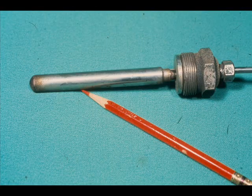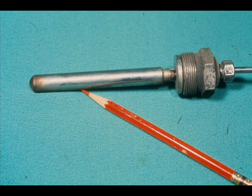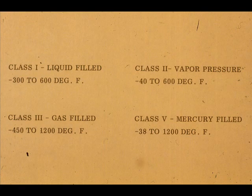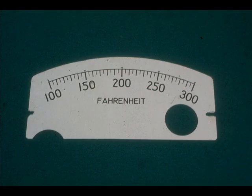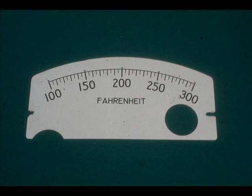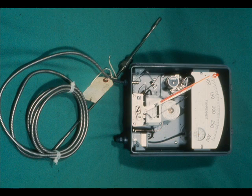Some disadvantages of the filled systems are the bulb may be too large to fit the available space. The maximum temperatures are not as high as electrical temperature measuring systems. Also, the span of the filled systems cannot be as narrow. Usually, the entire system has to be replaced if the tubing is broken or any part of the system fails.